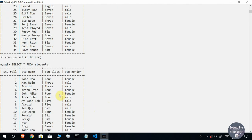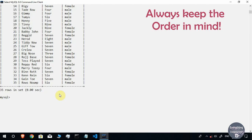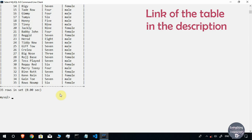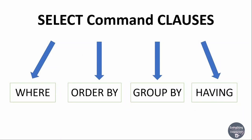If you change the order of the column names, the result set will be different. So whenever you run any SQL command, make sure you are giving the correct order. I will put the link to this table in the description so you can create the same table and experiment on it. These were the two most common and simple SELECT command syntaxes. You can modify the result set by adding different clauses to the SELECT command — the most common and important one is the WHERE clause.